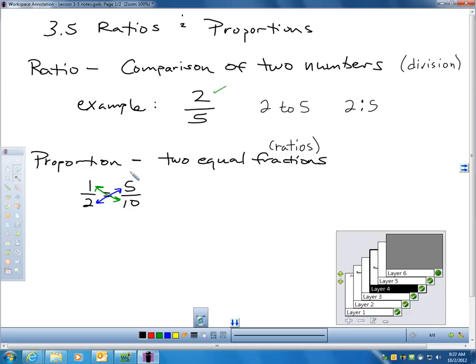Now, a proportion is always true if you can cross multiply and get the same products. This proportion is a true proportion. Here's how I know. If I take one times ten, I get ten. If I take two times five, I still get ten. If your proportion is a true proportion, the cross products will always be equal. And that's something important to know.